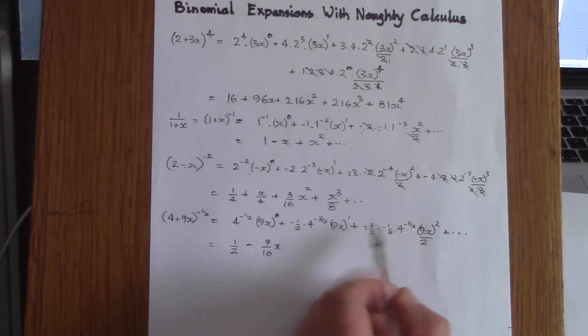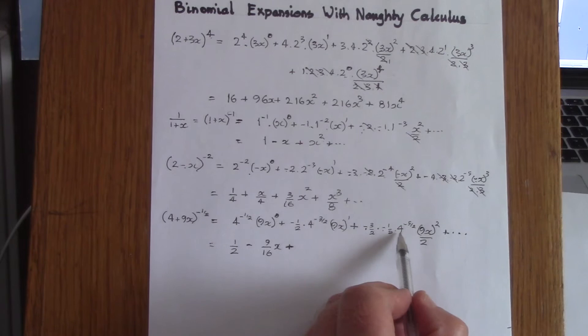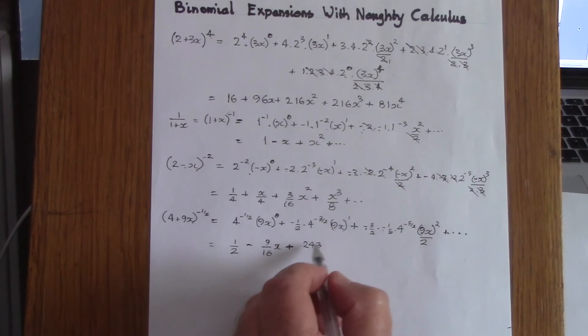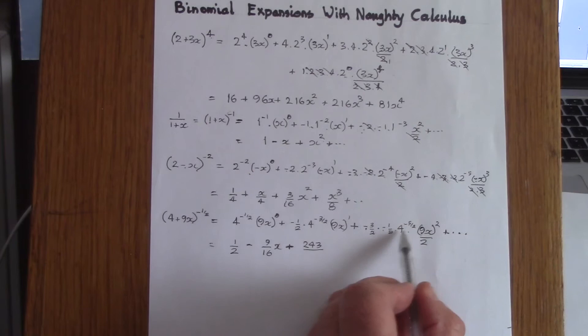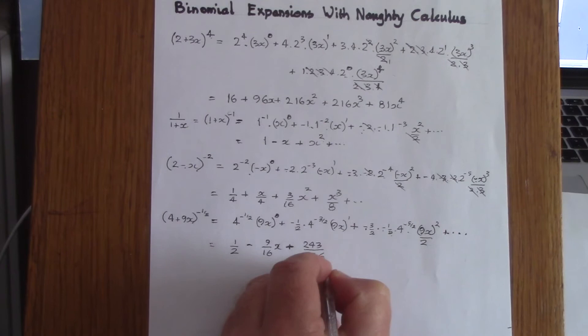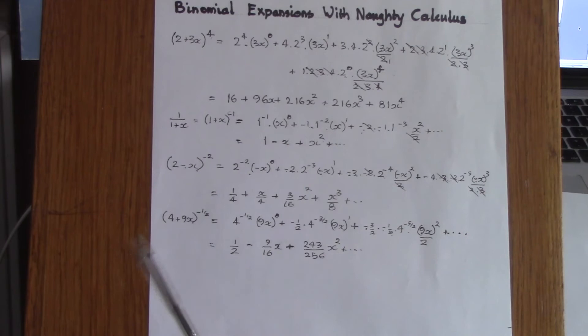Here minus times minus is plus. 9 squared is 81, times 3 is 243; and 4 to the power of minus 5 over 2 is 1 over 32, times 2 times 2 times 2 which is 8, giving 256. So we get plus 243x squared over 256. Note again that we didn't need to create a 1 first — we can move straight from the first two terms and continue the sequence.